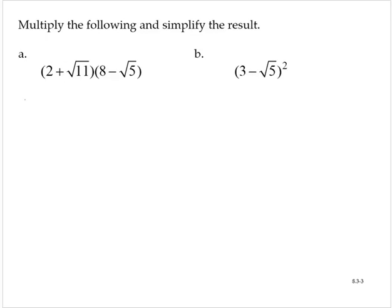So we have 2 times 8, which is 16. Then we have 2 times negative square root of 5, so minus 2 square root 5.